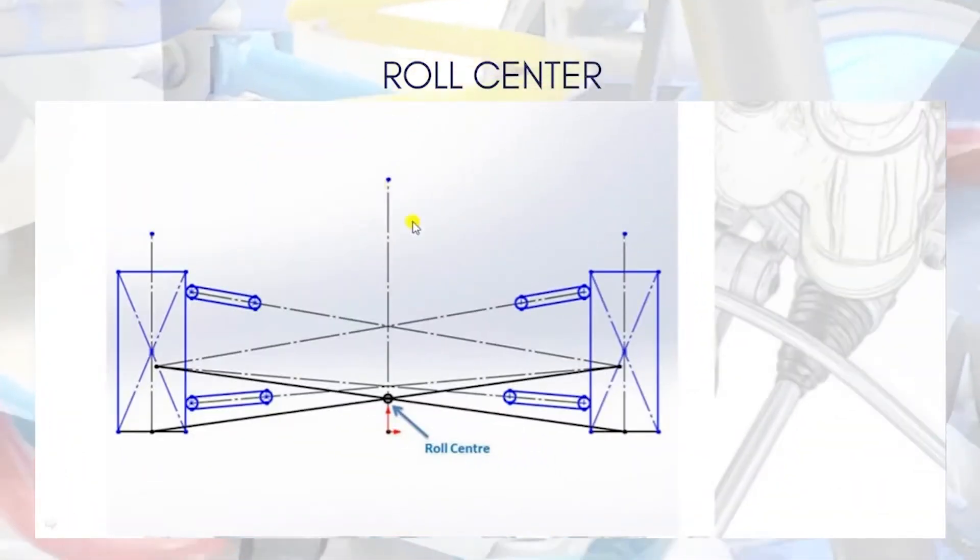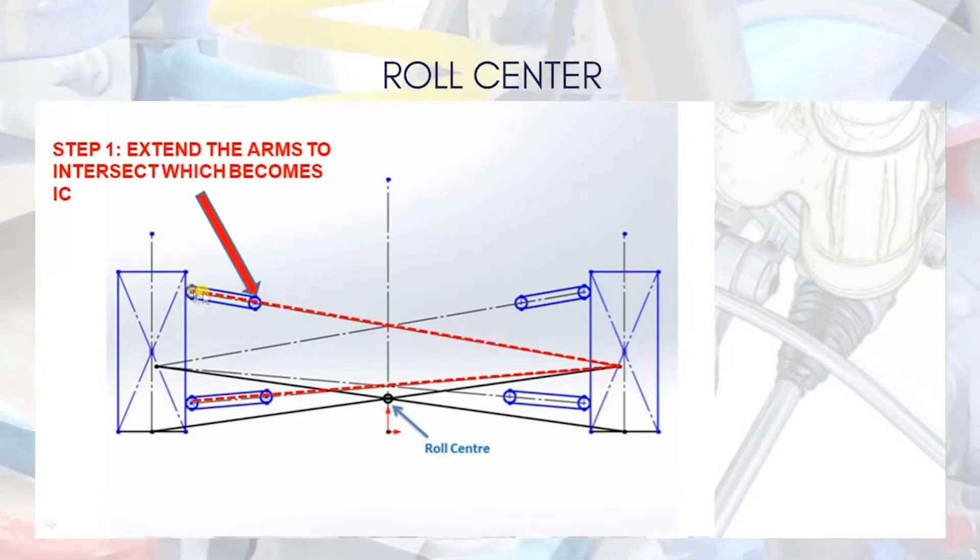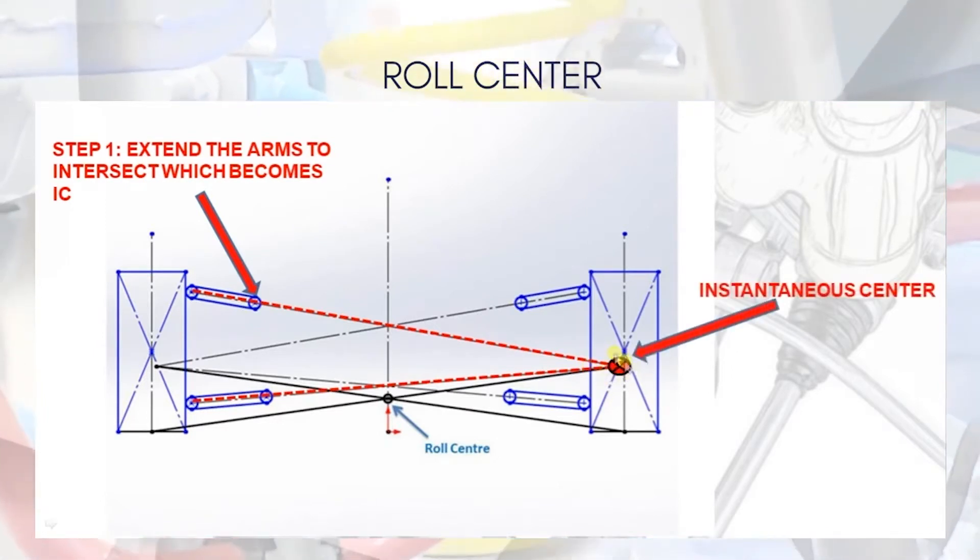So for you to calculate the roll center, I'll tell you in a very simple way. Step one will be you extend the upper and lower arms so that it intersects somewhere, and that intersection point is nothing but instantaneous center.